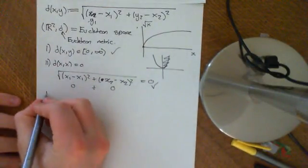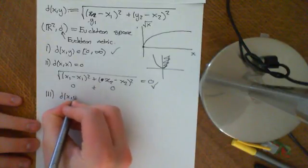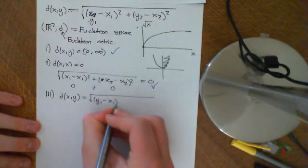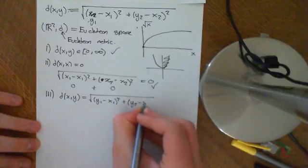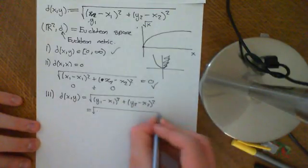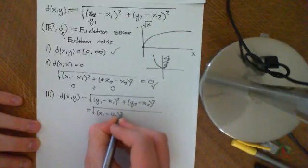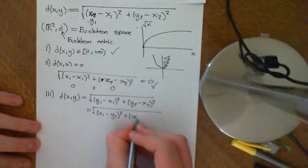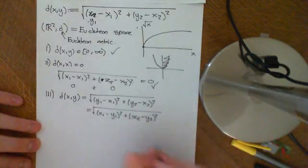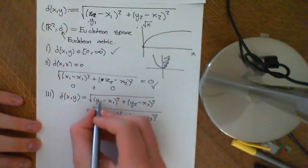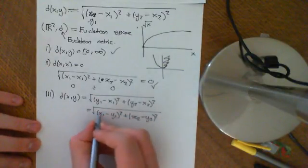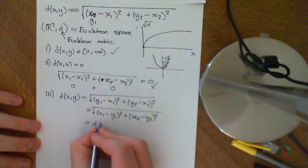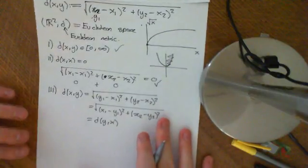Now the next property, property 3, is symmetry, that the distance between X and Y, which is equal to the square root of (Y₁ - X₁)² + (Y₂ - X₂)². Well, that's clearly going to be equal to (X₁ - Y₁)² plus (X₂ - Y₂)² because the squaring doesn't care which way you subtract them. So when you square them, obviously Y₁ - X₁ is the negative of X₁ - Y₁. But when you square negative 1, it just goes to 1 anyway. So this is equal to the distance between Y and X. So it does obey symmetry.